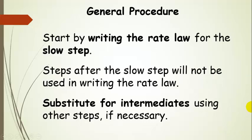The general procedure for writing a rate law from a reaction mechanism is to start by finding the slow step in the mechanism and writing the rate law for that step first. Once you have the rate law for the slow step, look and see if there are any intermediates in that rate law, and if there are, you'll need to use other steps to substitute for those intermediates. Keep in mind that steps after the slow step will not be used in writing the rate law.